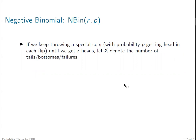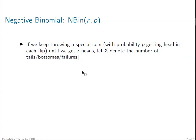Consider this random experiment. We're going to keep throwing a special coin until we have r heads. We don't stop until we have r heads. Let X now denote the number of tails we have. So here we are not counting the number of heads, but we are going to count the number of tails. If X denotes the number of tails in this type of random experiment, we see X follows a negative binomial distribution with parameter r, where r denotes the fixed number of heads we require, and successful rate p, where p is the probability of getting heads in each flip.